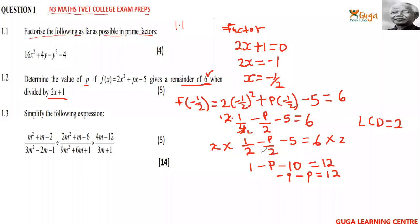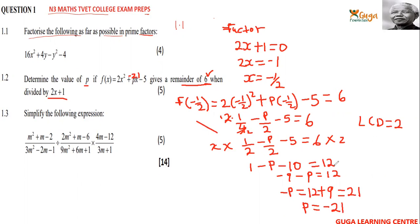Now you've got: negative p = 12 + 9 = 21. Dividing both sides gives p = negative 21. So the answer is p = −21. Don't forget there are many ways of simplifying this, but you should get p = negative 21.